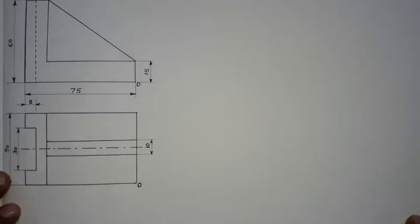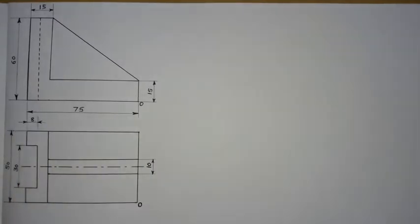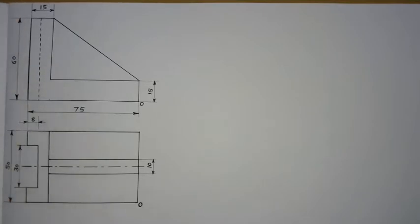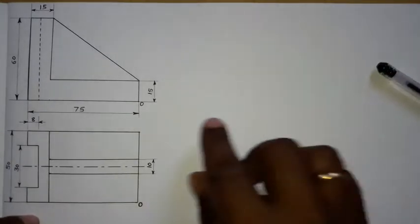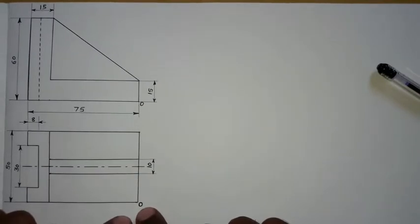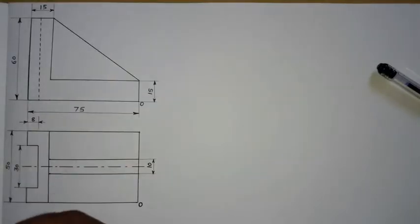Welcome students. This is my second lecture on isometric projection, and this is the second job — an L-type component. The length of the component is 75 mm, the height is 60 mm, and the width is 50 mm. The origin point O is located as shown. As discussed in the last lecture, we are going to prepare a block of given size: length 75 mm, height 60 mm, and width 50 mm.